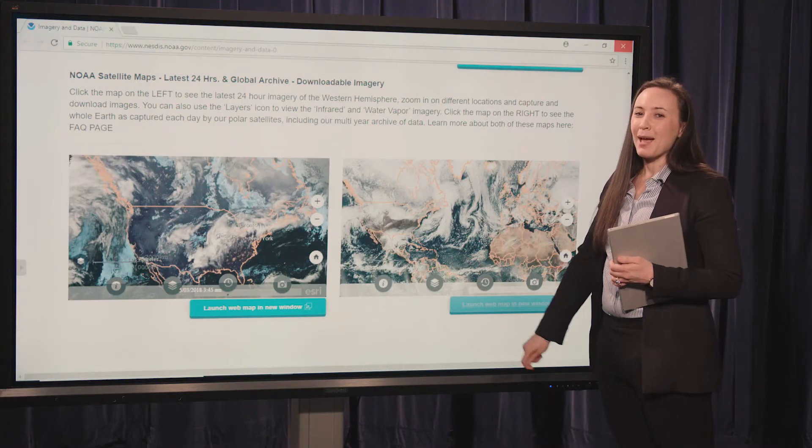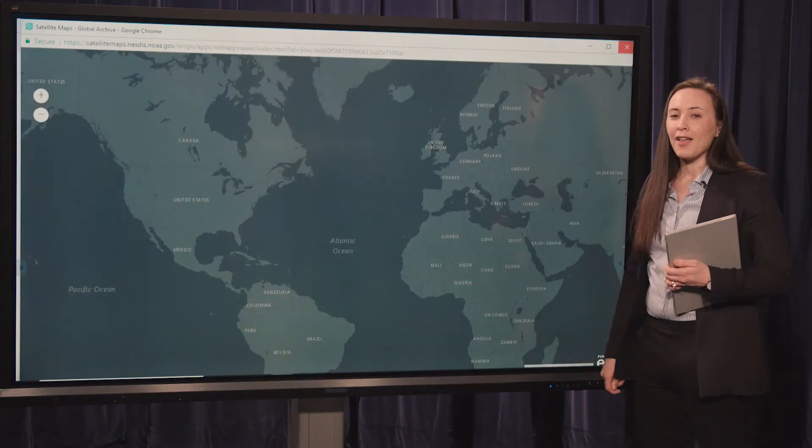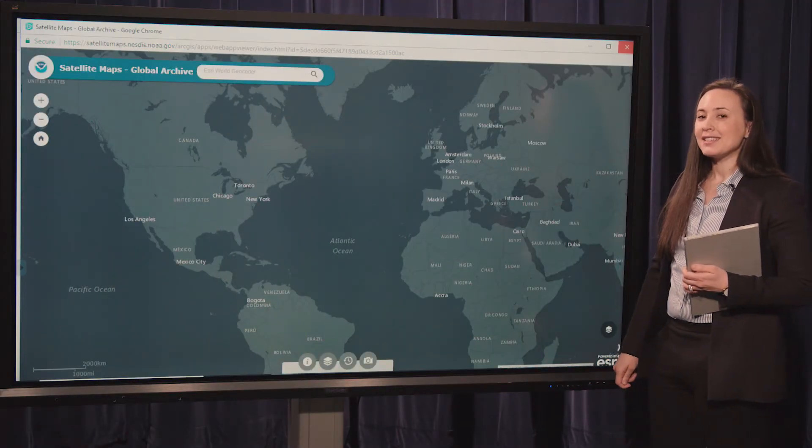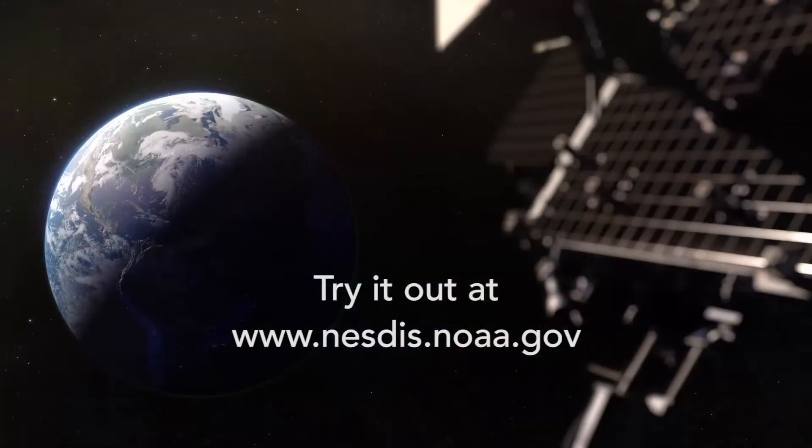Use this map to see the latest global view of the Earth. You can launch this one in a new window as well and go back in time to see past historical events like the hurricane season from last year.